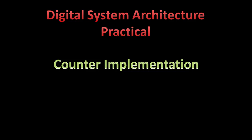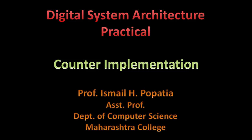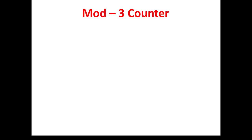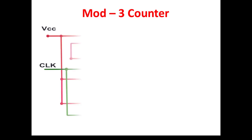Hello everyone, welcome to the digital system architecture practical series. In today's session we will study about counter implementation. Let us start with mod-3 counter. Mod-3 is a counter which counts up to three. With a two-bit number we have: 00, 01, 10 — only three counts — and then it resets again.